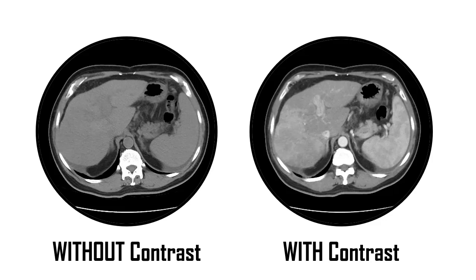However, when we scan this patient again with contrast on the right, we can see the tissues of the abdomen much more clearly. It's easier to differentiate between those tissues, and now we can see something very important in the liver. In the scan without contrast, the liver looks fine, but in the scan with contrast, now we can see a significant abnormality in the right lobe of the liver. This patient probably has hepatocellular carcinoma — in other words, a primary cancer of the liver. And this is why it's so important to use various forms of contrast in CT imaging. There's just some things that we see with contrast that we would never see without contrast.